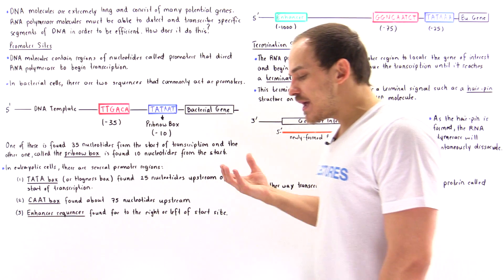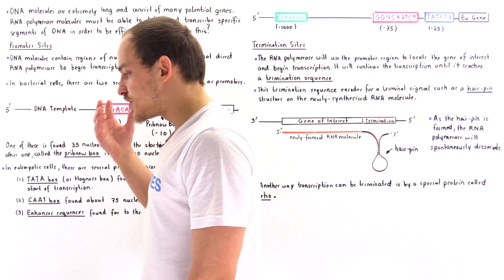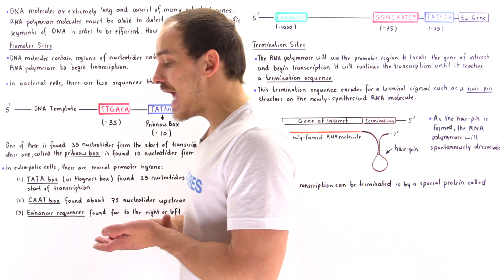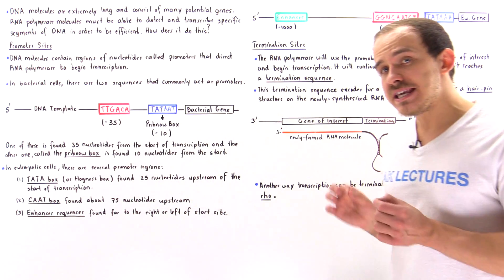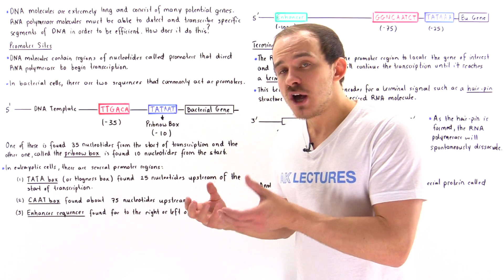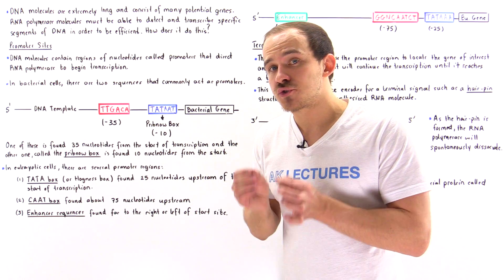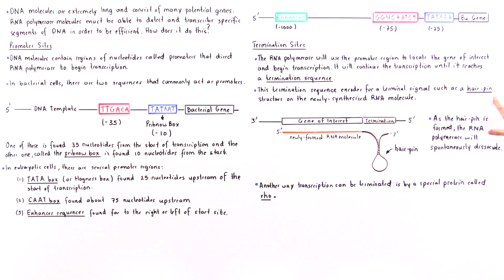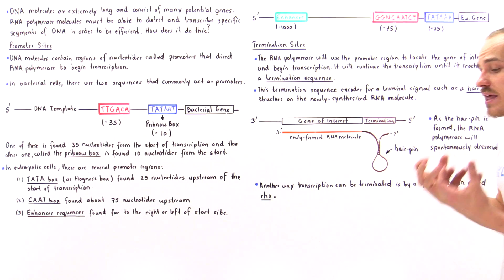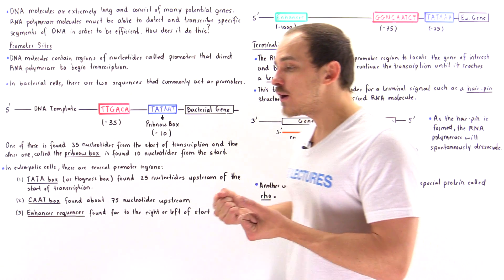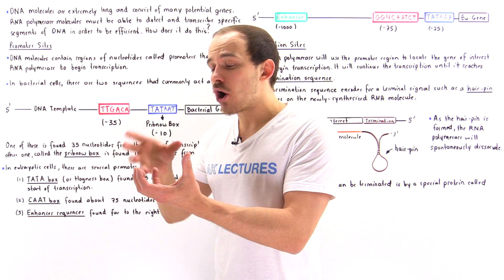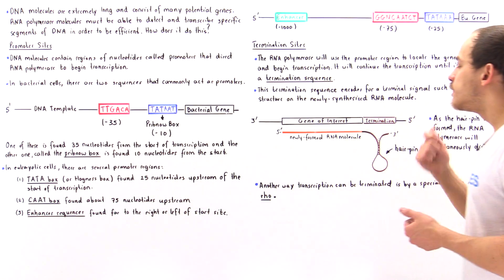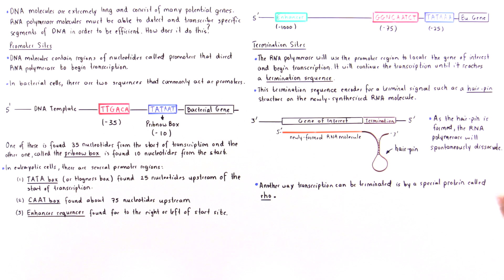What is special about the termination sequence that allows the process to end? The termination sequence usually codes for a special structure on the RNA molecule — for example, a hairpin. When that hairpin structure is formed, the RNA polymerase molecule will spontaneously dissociate from the RNA molecule.